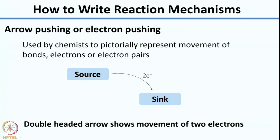We also looked at radical mechanisms, where you do not have charged intermediates but instead intermediates containing single electrons called radicals, and how they come together to form products. The third classification was concerted reactions, where all bonding changes occur at the same time in a single step — essentially no intermediates involved. We then looked at how to write mechanisms using arrow pushing or electron pushing.